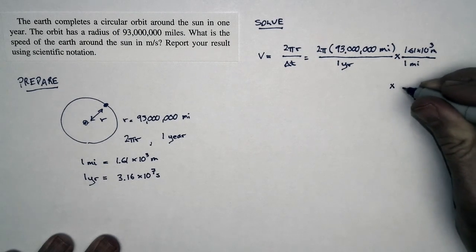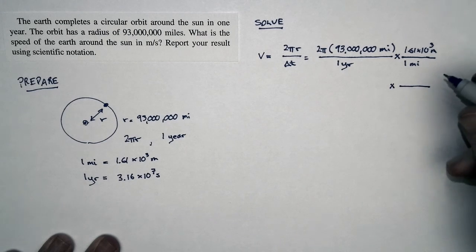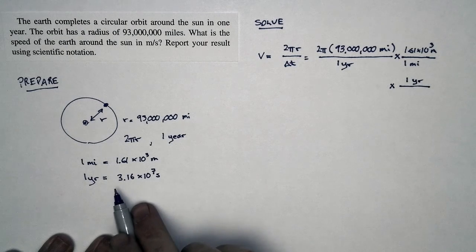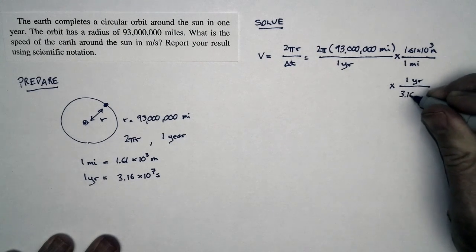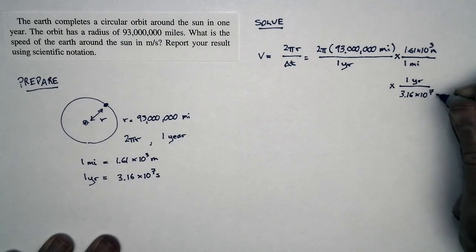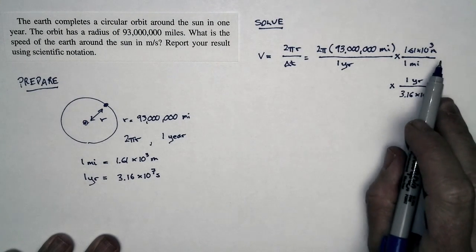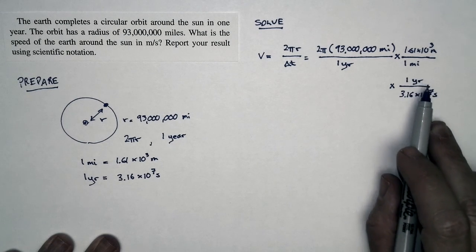We're also going to multiply by a factor of one, which gets rid of years and gives us seconds. So I'm going to put one year in the numerator. In the denominator, I'll put the number of seconds that's equal to one year. That's 3.16 times 10 to the seventh seconds. So it's this many miles per year, convert miles to meters, convert years to seconds.